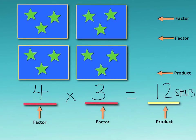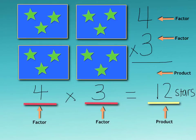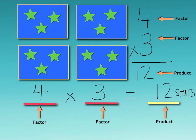We can write multiplication problems from left to right, or we can write them vertically, which is up and down. We would have four groups of three, and that gives us again the product of 12. So here's our factor four, our factor three, and our product. We got all of that information from this model.